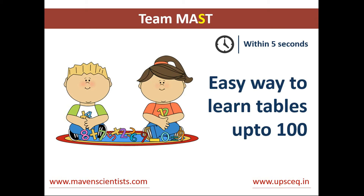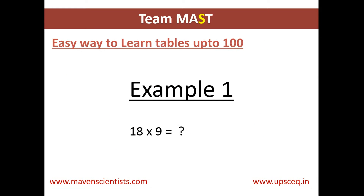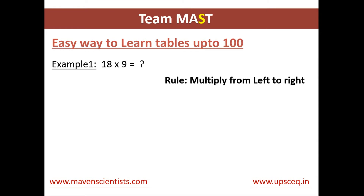So let's say if a person asks you randomly a question like what is 18 into 9. It's not necessary that you should know the table of 18 to calculate this. You can calculate this in your mind and give them an answer. The first step is to multiply from left to right.